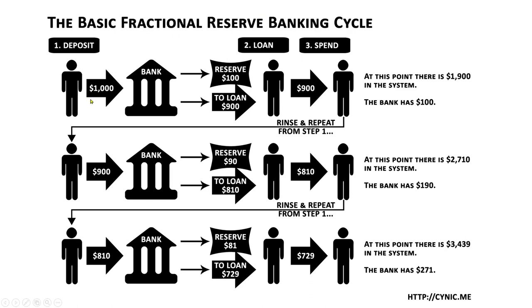Here's the basic fractional reserve banking cycle. A deposit of $1,000 goes into the bank. At a 10% reserve ratio, they keep $100 and loan out $900. That $900 gets spent and makes its way back to a bank. They keep $90 in reserve and loan out $810. The $810 comes back into the banking system, reserve of $81, they loan $729. That repeats over and over until you get roughly 10 times the original deposit — so $1,000 created $10,000 in loans. That's the M2 money supply, and there's interest tied to all of these loans.